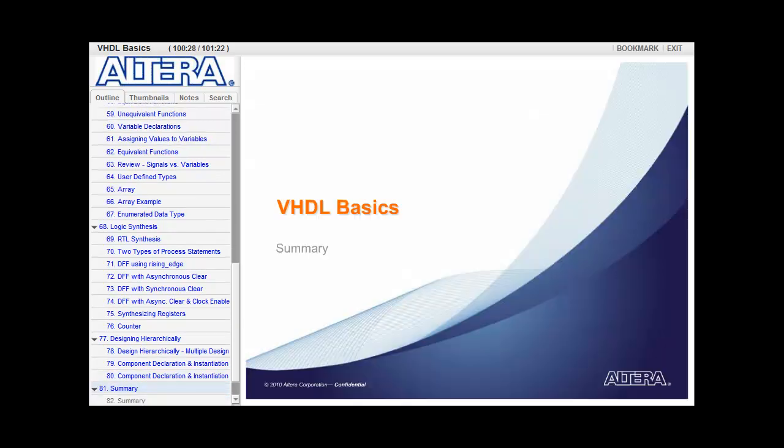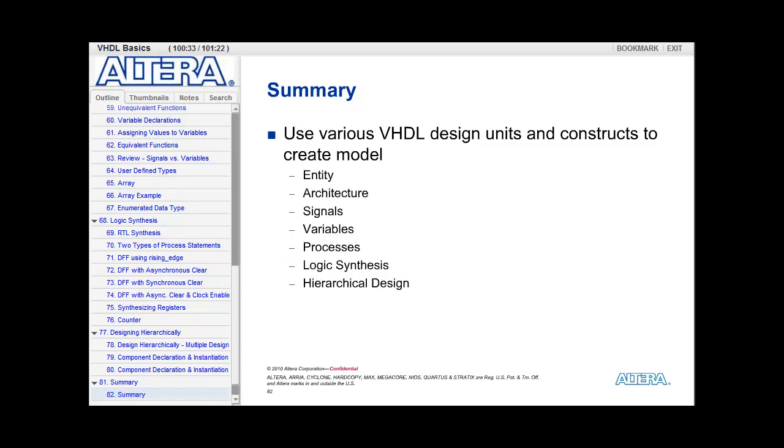So that concludes our discussion of the VHDL basics. So from this training, we looked at how to use various VHDL design units and constructs to create a model. Examples of those include the entity, the architecture, signals, variables, and processes, both implied and explicit, as well as how to do logic synthesis and design hierarchically.